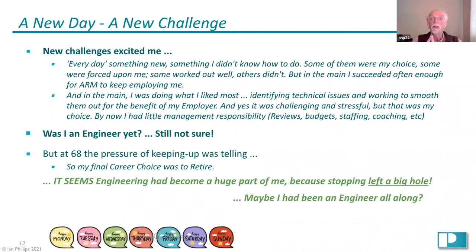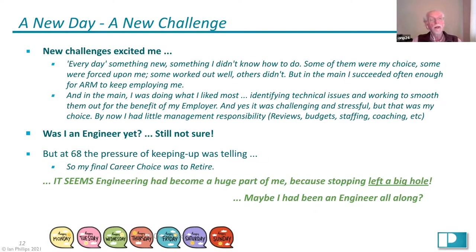It was challenging and stressful, and there probably weren't many weeks when I did only 37.5 hours — usually much longer. But it was me that chose that. By now I had established little management responsibility, so I didn't have to do reviews, budgets, staffing, and recruiting. At 68, the pressure of keeping up was beginning to tell, and my final career choice was to retire. Engineering had become a huge part of me, because when I stopped, it left a great big hole. So maybe I had been an engineer all along.